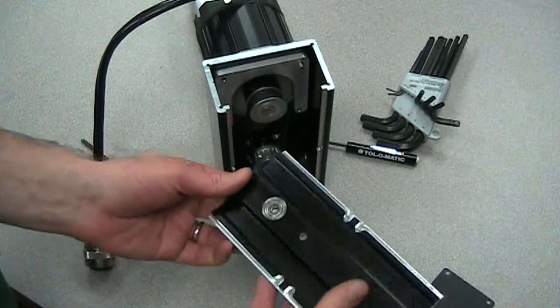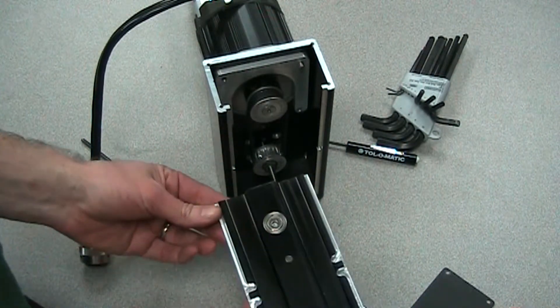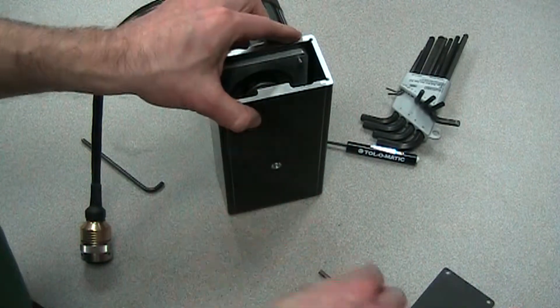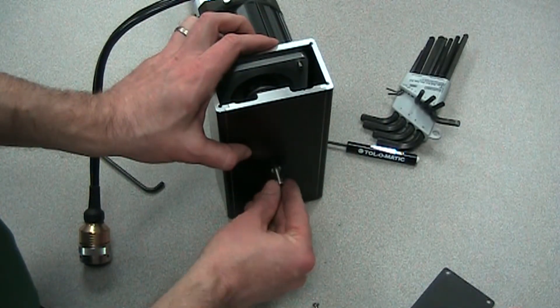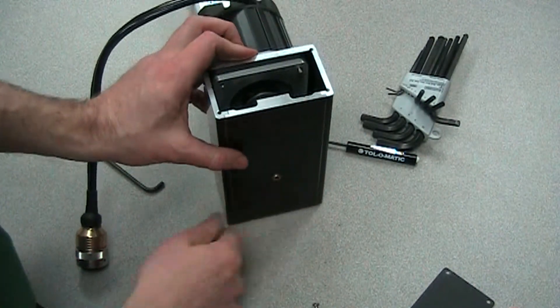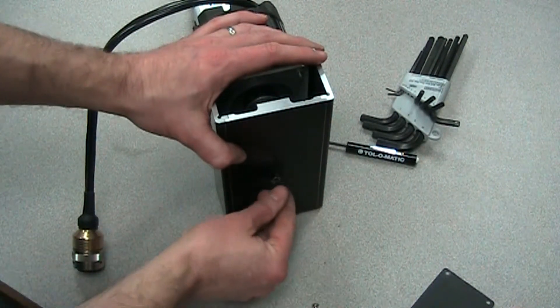Now before we tension the belt, we want to put this plate on. There's a bearing in here that supports the lower shaft. You can see that just lines right up. So I'll put that on and feed the screw through the center into that threaded hole on the opposite side of the housing. We'll tighten that up.